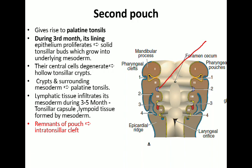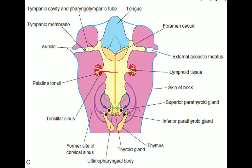So the central part degenerates to form the tonsillar crypts. The main thing to remember is that the second pouch forms the palatine tonsil, and the remnant of the pouch is represented by the intra-tonsillar cleft. In this diagram you can see the palatine tonsil and the tonsillar sinus, which is the remnant of the second pharyngeal pouch.